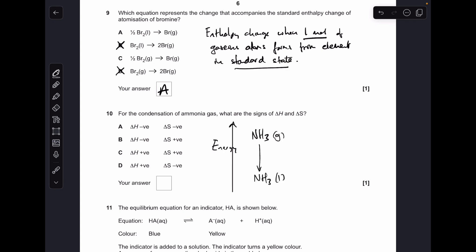Moving on to 10. I've drawn a schematic for the condensation of ammonia. In the gaseous form, it's got more energy than in the liquid form. So when you condense something, energy is released. This is an exothermic process, so the delta H would be negative. If we think about the amount of disorder, there's more disorder in the gaseous ammonia than the liquid ammonia. So the entropy is decreasing as well. Option A is the answer.